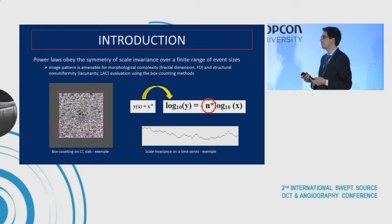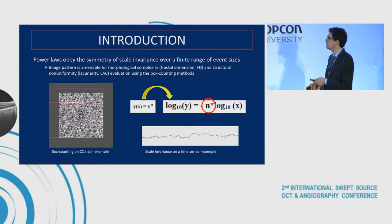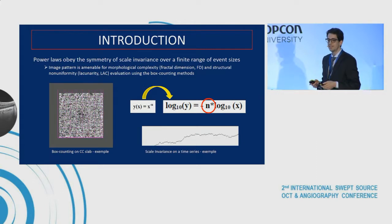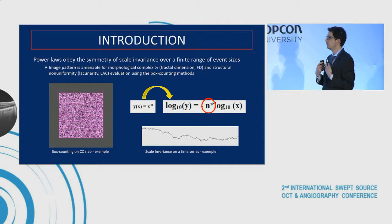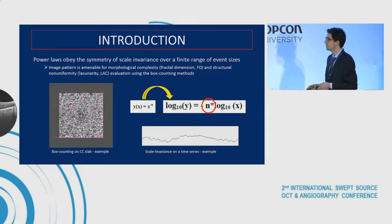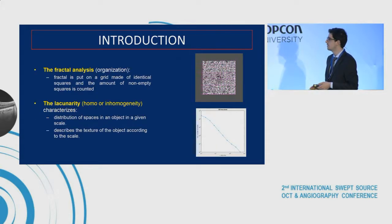An interesting property, and perhaps the most striking of the power laws, is that they obey a symmetry of scaling invariance over a finite range of event sizes. This scaling invariance is much better demonstrated by analogy in comparison to mathematical formulas. Most importantly, it enables us to study the organization using box counting methods, and we can plot the organization in terms of fractal dimension and lacunarity of our image patterns if they follow this power law.